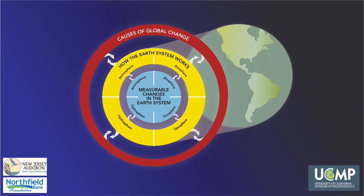Scientists and educators developed a way to organize the major components of the Earth system. Within our framework, there are three primary categories: causes of global change — the human activities and non-human phenomena that change the Earth system; how the Earth system works — the major processes that shape the world around us; and measurable changes in the Earth system — the evidence or data that indicate how fast and how much the world is changing.